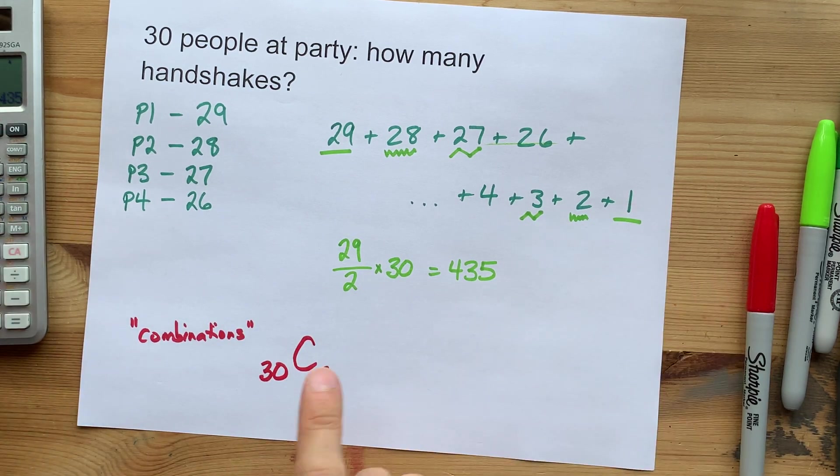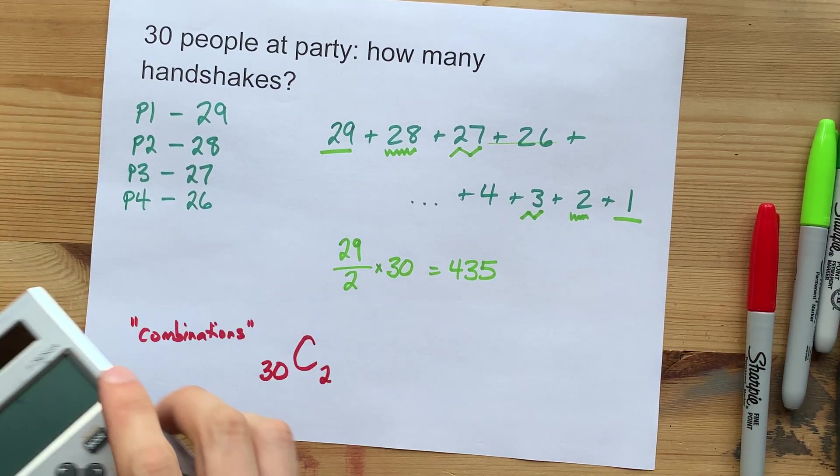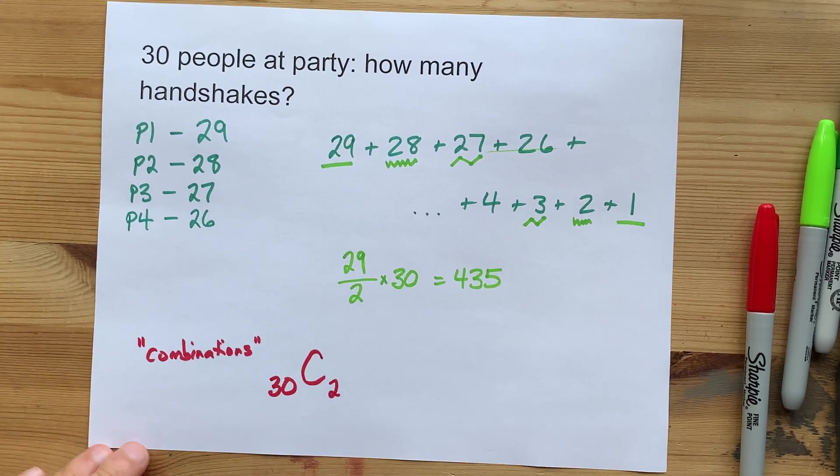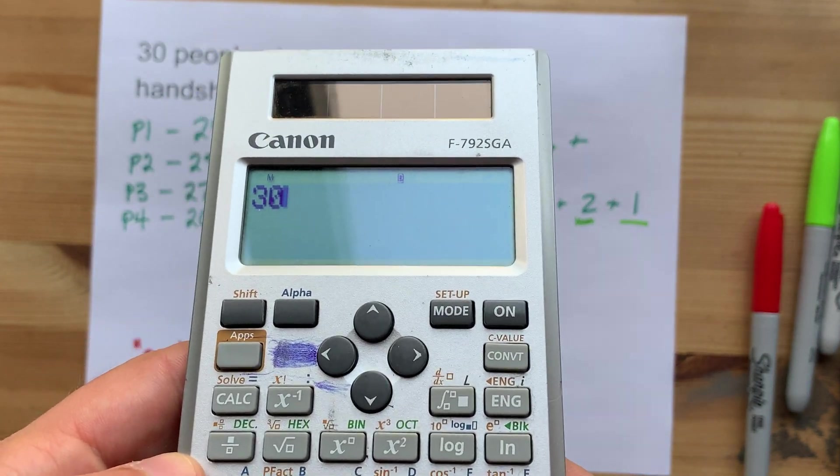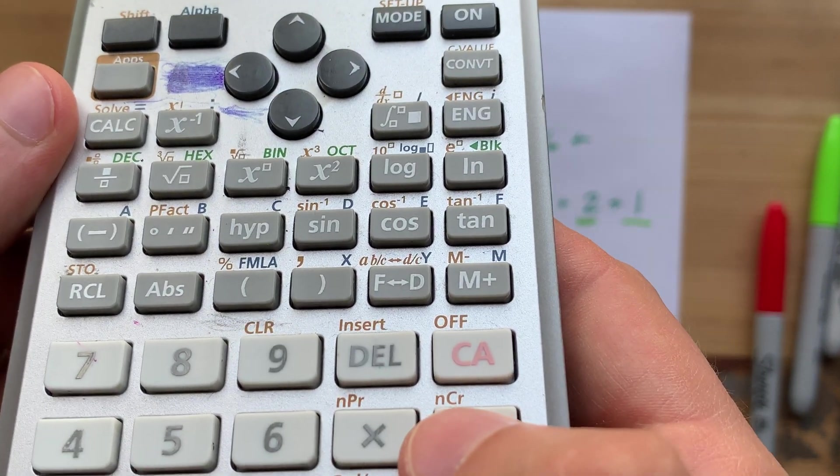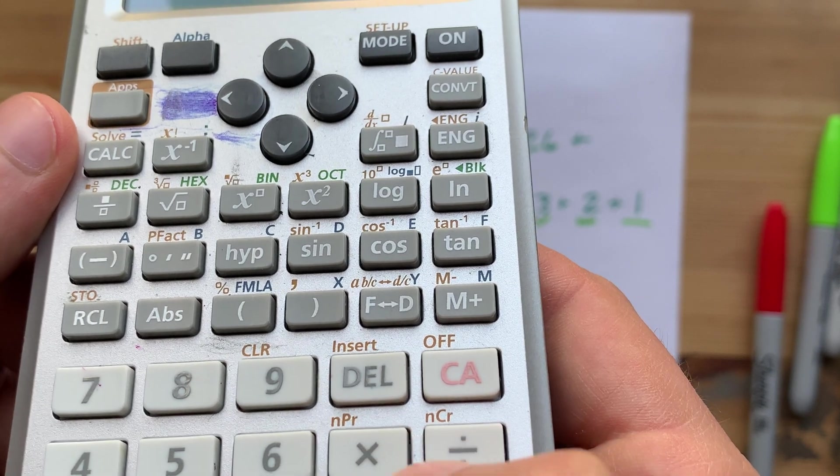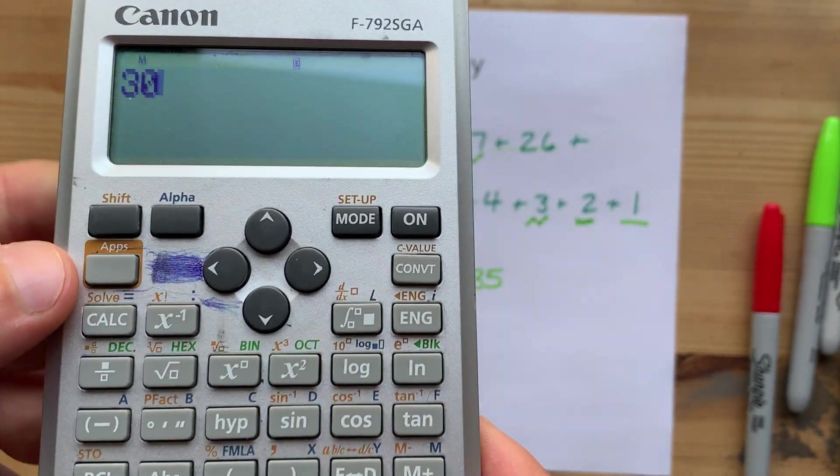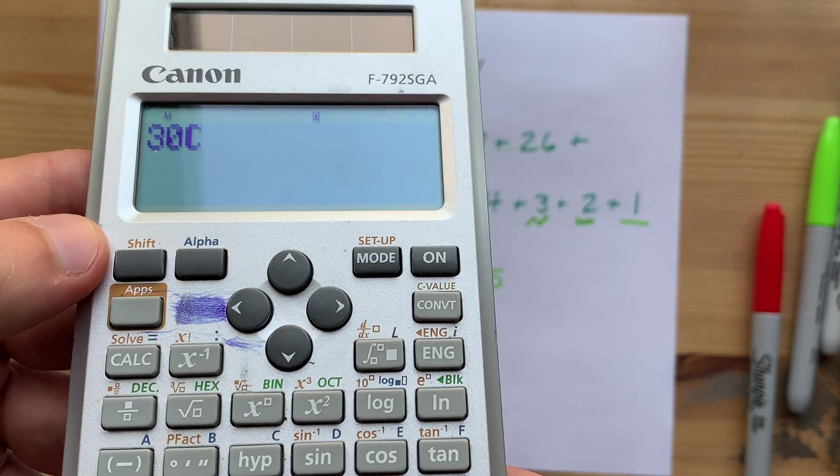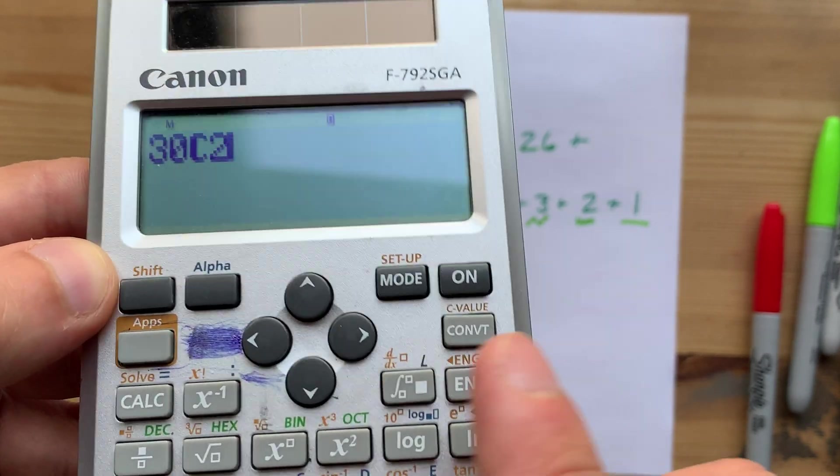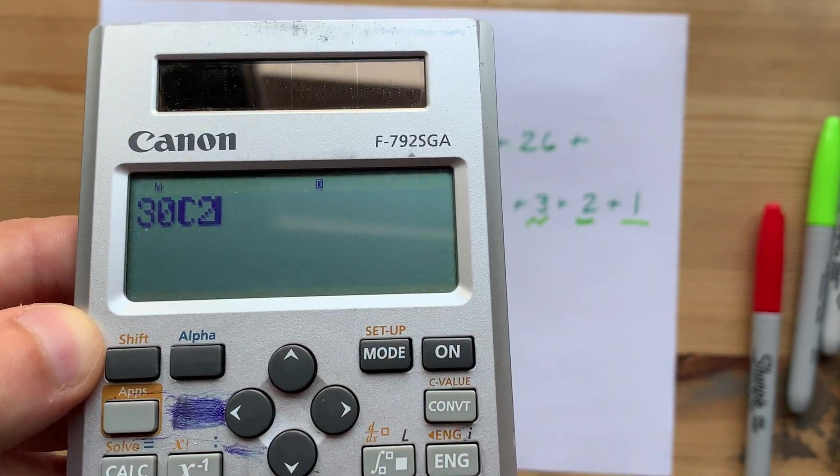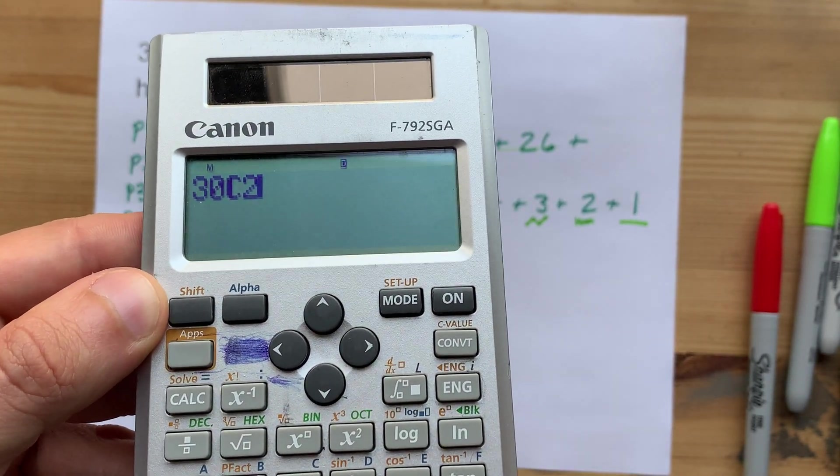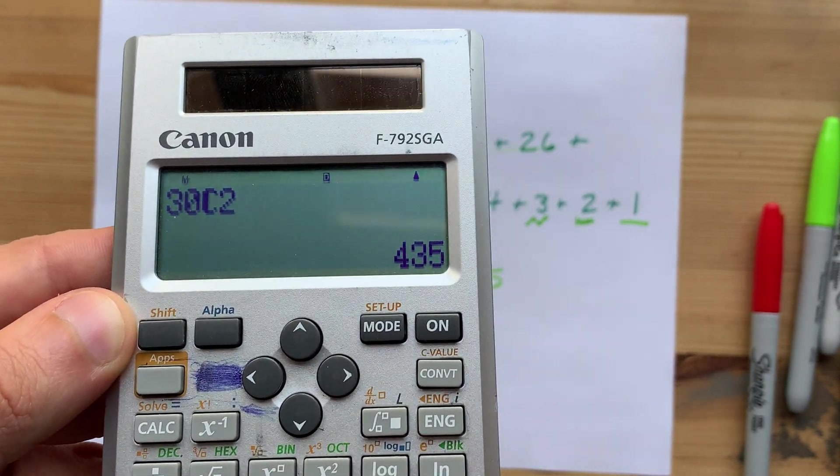Your calculator will do this for you and it's a little complicated how it would work. But 30. I have a button for NCR right here. That's the number of things you're arranging and R is how many you're choosing for each group. 30 people and you're choosing two at a time. How many ways are there to do that? 435.